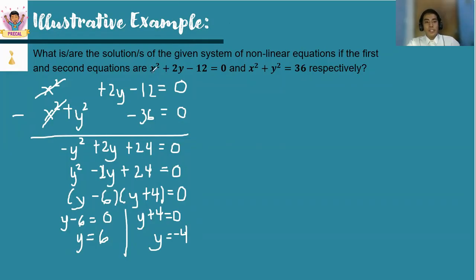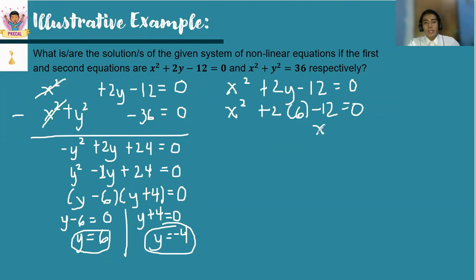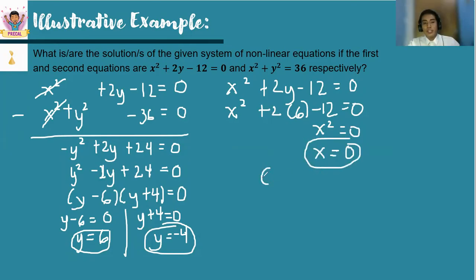Now we use the first equation to solve for x. Substituting y equals 6 into x squared plus 2y minus 12 equals 0: x squared plus 2 times 6 minus 12 equals 0, so x squared plus 12 minus 12 equals 0, meaning x squared equals 0, and x equals 0. So the first solution is (0, 6).